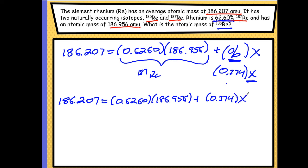So now I've got an expression here, I'm going to solve for x, so I'm going to combine some like terms here. 186.207, I'm going to multiply these two numbers, 0.6260 times 186.956, and I get this number, 117.03456, plus 0.374x.